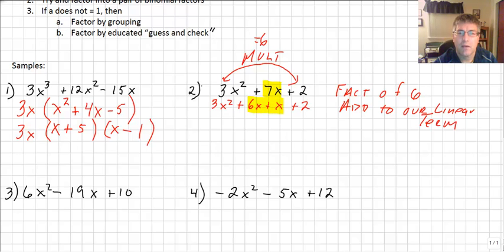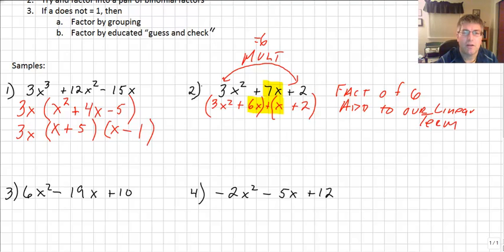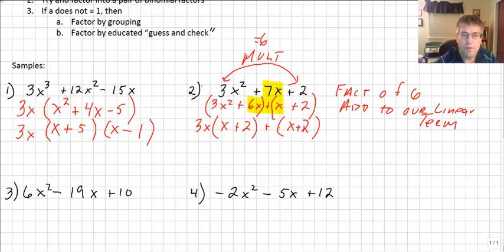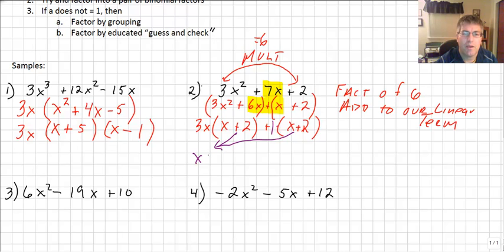6x plus x equals 7x, so we've rewritten the trinomial equivalently. Now we can factor by grouping: take the first pair and second pair. From 3x² + 6x, the common factor is 3x, giving us x + 2. We hope for an x + 2 when factoring the second pair — and indeed, plus 1 times (x + 2) appears. Pulling out (x + 2), we get (x + 2)(3x + 1). Successfully factored without guess and check.